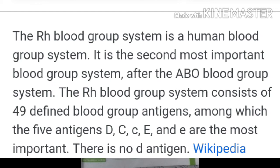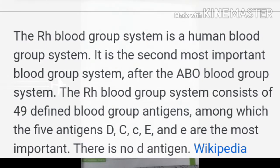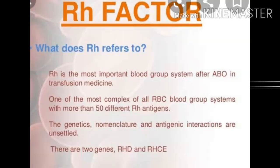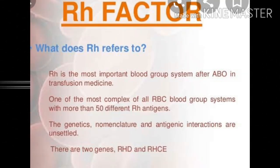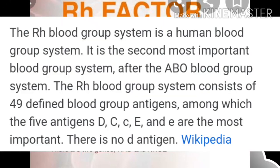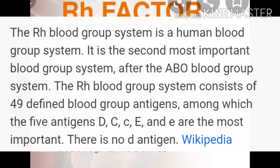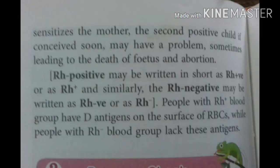The first RH positive child born to an RH negative mother will generally be normal. However, if the mother becomes sensitized after the first pregnancy, a second RH positive child, if conceived soon after, may have problems — sometimes leading to the death of the fetus and abortion. People with RH positive blood group have the D antigen on the surface of their RBCs, while people with RH negative blood group lack this antigen.